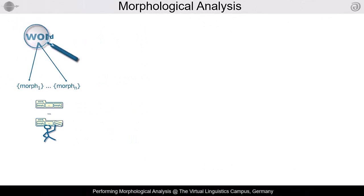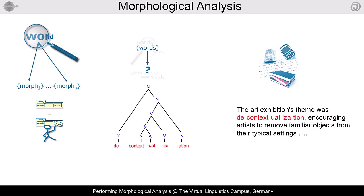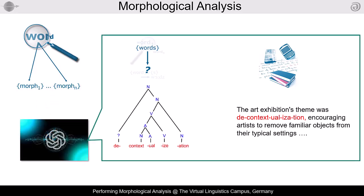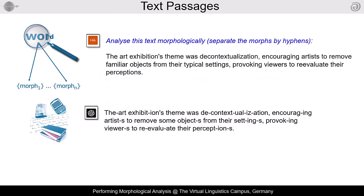Among the basic competencies in linguistics is the morphological analysis of words in isolation or within text passages. Today, large language models such as ChatGPT can perform both tasks reasonably well — the analysis of words and the analysis of text passages.